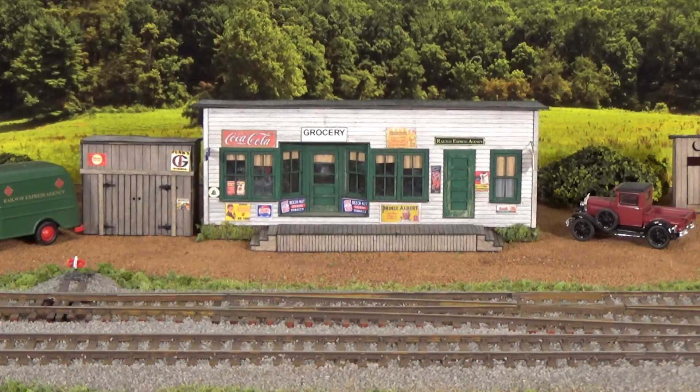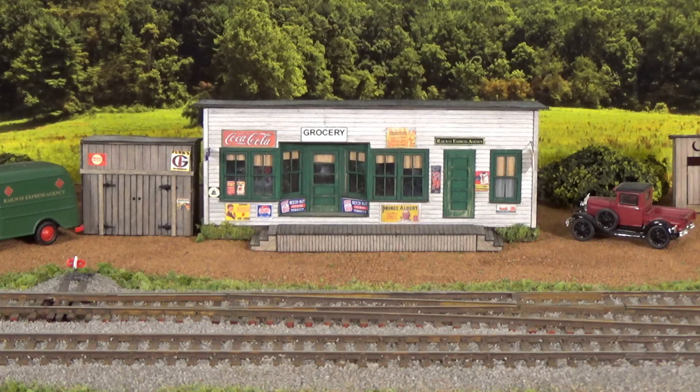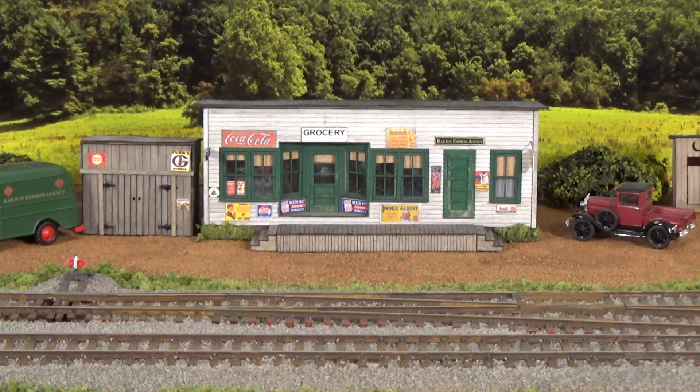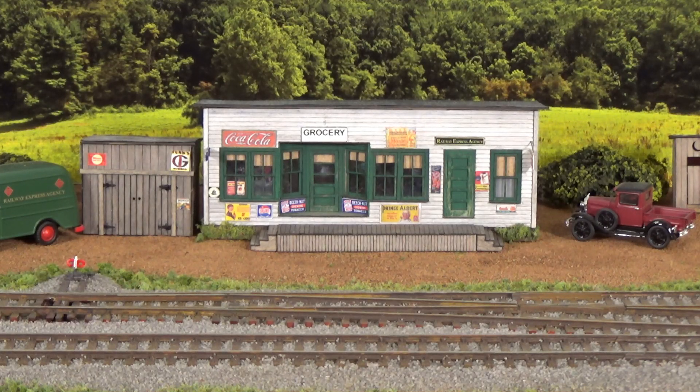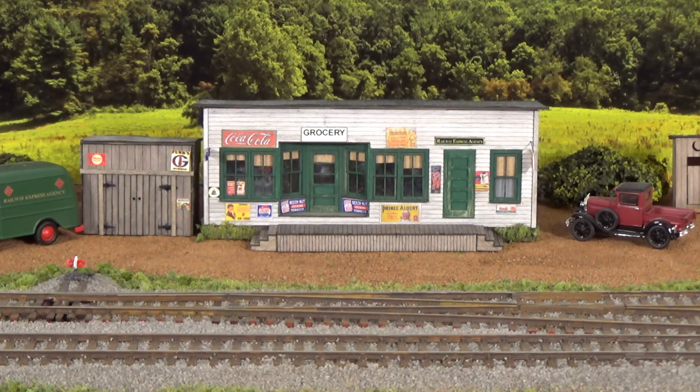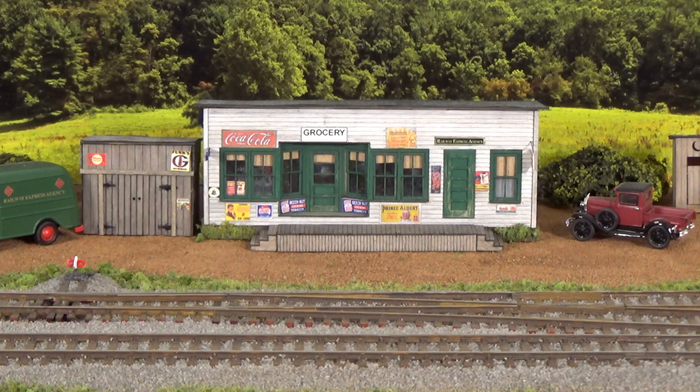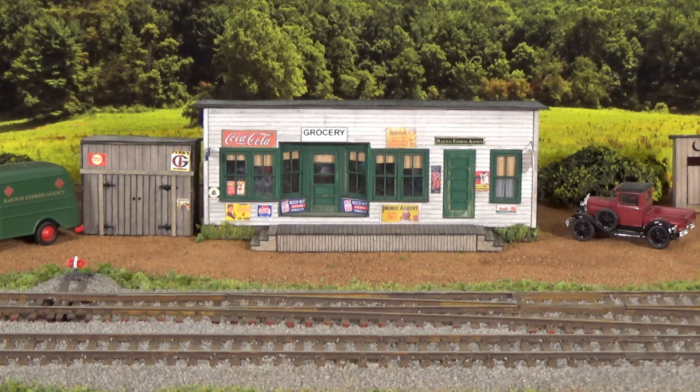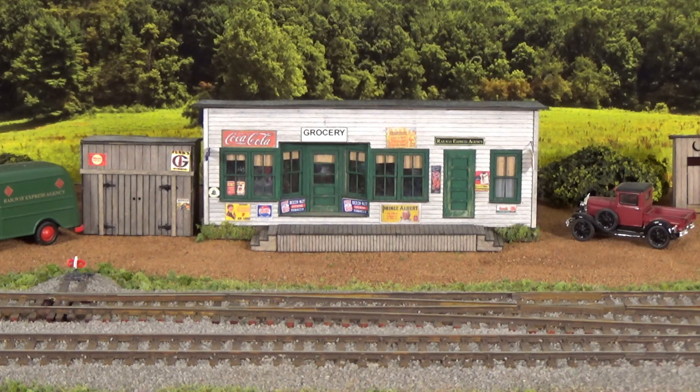Here we are on the Piedmont Southern layout with this little grocery store that I showed how to light up in one of the chapters in my book. You can see here, the lights are off, nobody's home, it looks dark, unoccupied, basically abandoned.